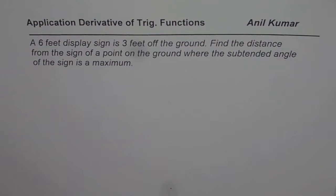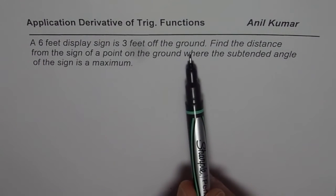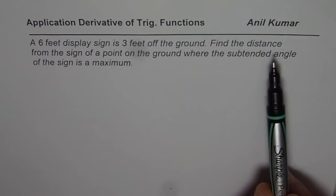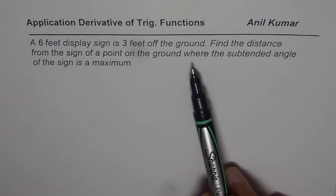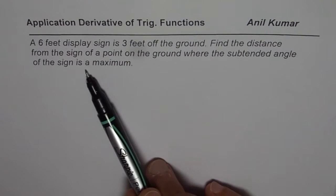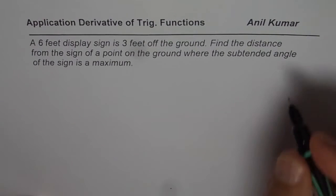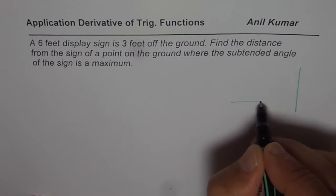The question here is: A 6 feet display sign is 3 feet off the ground. Find the distance from the sign of a point on the ground where the subtended angle of the sign is a maximum. So let me first sketch and then we'll read the question and try to understand the situation.